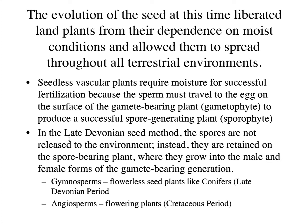Seed-bearing plants are either gymnosperms — flowerless seed plants like conifers and pine trees, which really developed in the late Devonian period — or angiosperms, which we won't see until Cretaceous time. Angiosperms are the flowering plants.